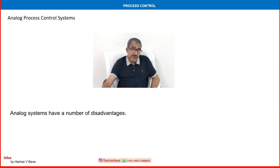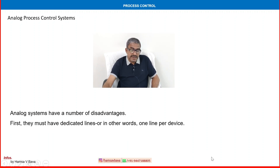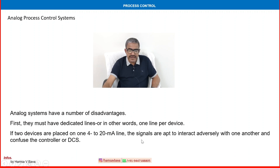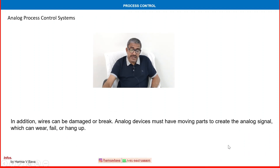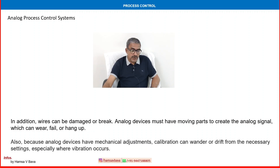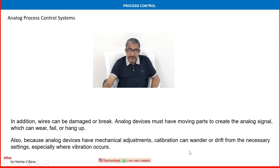Analog systems also have a number of disadvantages. First, they must have a dedicated line — one line per device. If two devices are placed on one 4 to 20 milliamp line, the signals are apt to interact adversely and confuse the controller or DCS. Electrical lines can also be influenced by magnetic fields and radio frequencies, and wires can be damaged or break. Analog devices must have moving parts to create a signal, which can wear, fail, or hang up. Additionally, because analog devices have mechanical equipment, calibration can wander or drift, especially where vibration occurs.